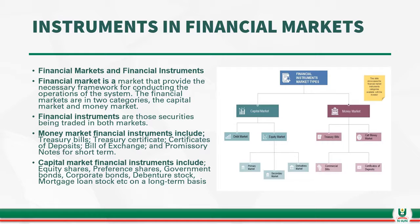The financial markets instruments provide the necessary framework for the conduct of operations of the system. The financial markets are in two categories: we have the capital market and the money market. The capital market basically deals with funding for the long term, while the money market is just for financing short-term financial obligations. The instruments used in the money market include treasury bills, treasury certificates, certificates of deposit, bills of exchange, and a host of others. While in the capital market, we have instruments such as equity shares, government bonds, corporate bonds, venture capital, and a lot of others.